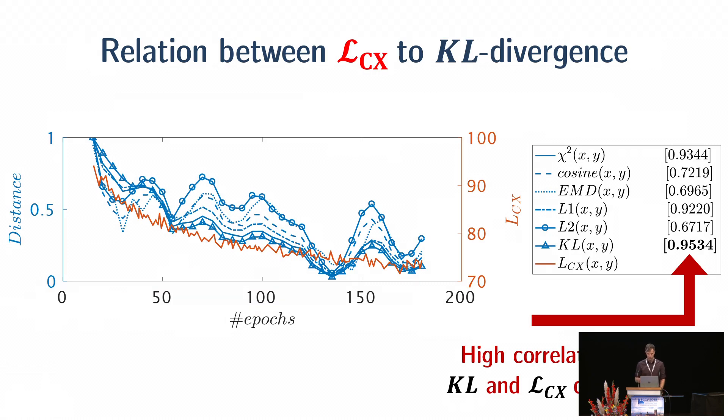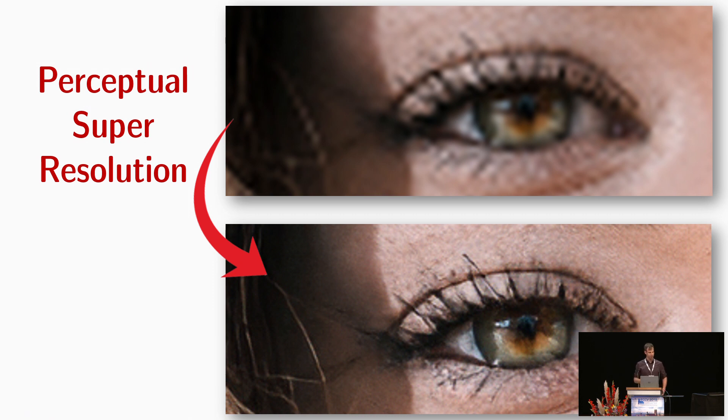We also drove some theoretical connection between the KL divergence of the underlying distribution of the points and our contextual loss. And last, we are showing an additional application of perceptual super resolution as shown in this image.